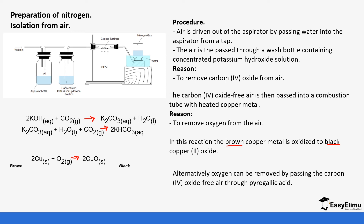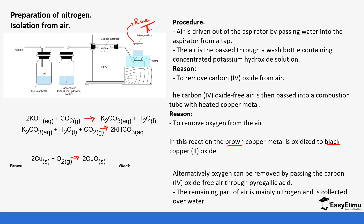Oxygen can also be removed by passing it through pyrogallic acid, which absorbs oxygen. The remaining part of the air is mainly nitrogen and is collected over water. However, this isolation method does not produce a pure amount of nitrogen gas — the nitrogen produced is not pure because rare gases, particularly argon, are also collected along with the nitrogen.